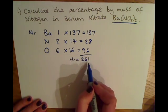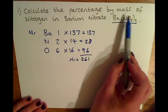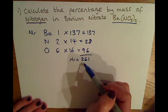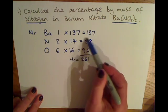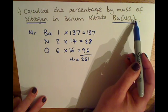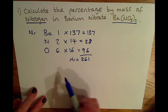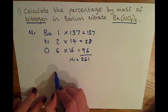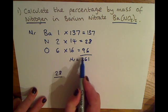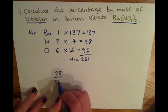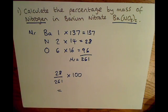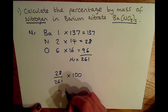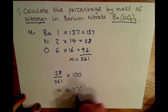We've been asked to calculate the percentage by mass of nitrogen in barium nitrate. The relative mass of nitrogen in barium nitrate is 28, because we have two lots of nitrogen. So to calculate the percentage of nitrogen, we do 28 divided by 261 times by 100, which gives a percentage by mass of nitrogen of 10.7%.